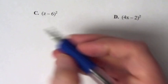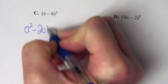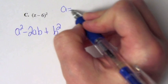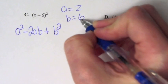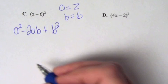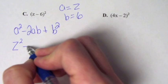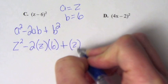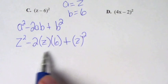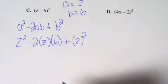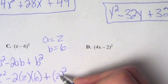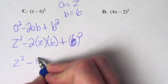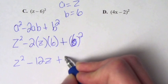So using the formula a squared minus 2ab plus b squared, we pick out a and b. A is z and b is 6. Plugging these in: z squared minus 2 times z times 6 plus 6 squared. Simplifying the middle term, we get z squared minus 12z plus 36, because 6 squared is 36.